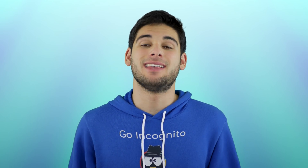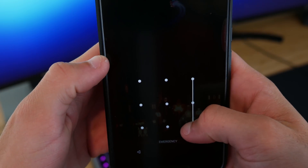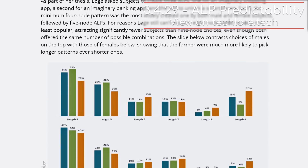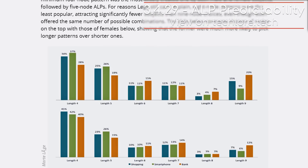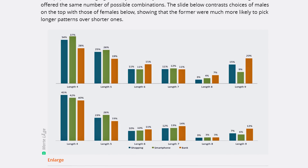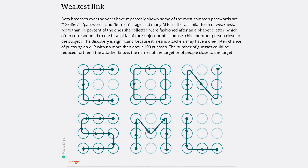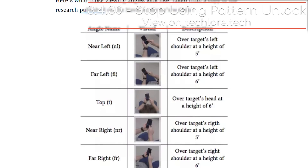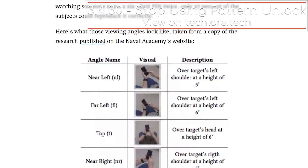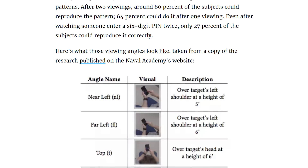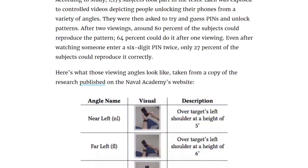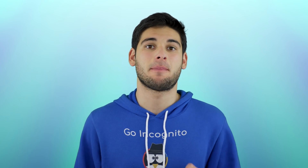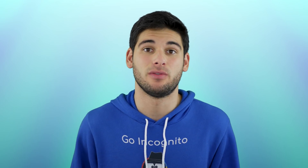Another form of verification is ALP, or Android Lock Patterns. In short, avoid these. At the PasswordsCon conference in 2015, researchers reported that people often used the first letter of their first name, and that people tended to use the dots in the middle and not in the four corners. Security researchers at the U.S. Naval Academy and the University of Maryland, Baltimore County, published a study showing an observer can visually pick up and reproduce an ALP with relative ease. About two of every three observers successfully recreated a pattern from five or six feet away after a single viewing.